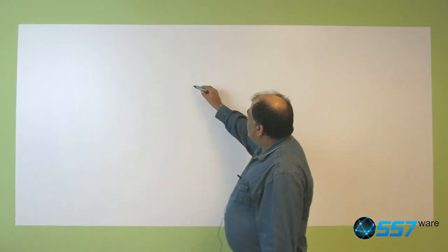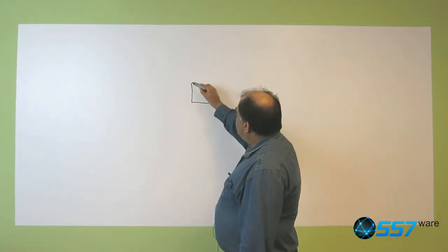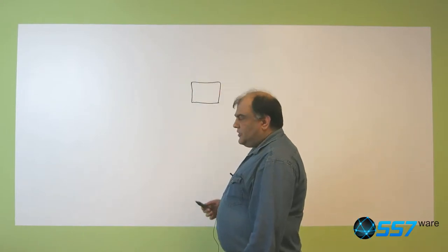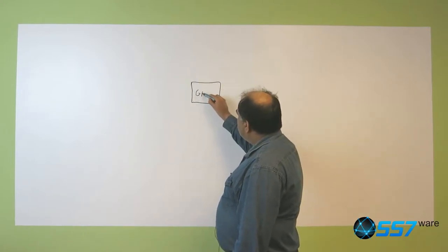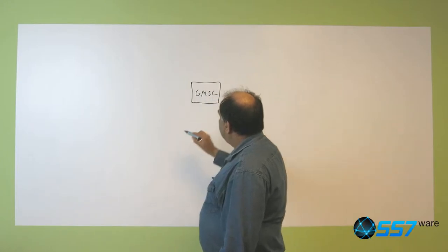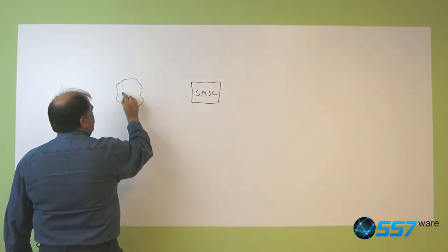The subject for today is the Gateway MSC. The purpose of this Gateway MSC is to direct the calls received for subscribers of the network. So we have the GMSC that receives the calls from the PSTN.